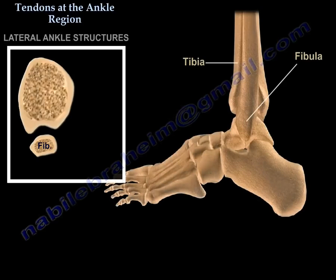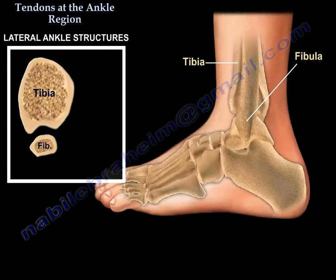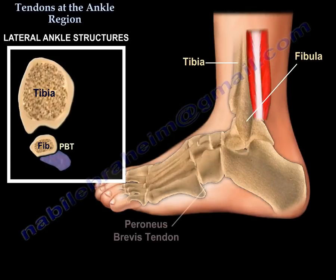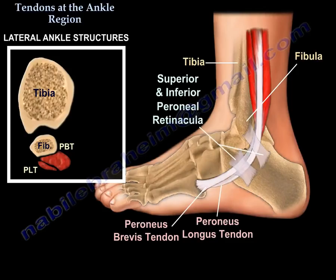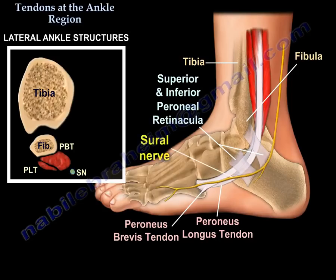Tendons at the lateral aspect of the ankle. There are two tendons: the peroneus brevis and the peroneus longus. Both run behind the fibula. You can also see the superior and inferior peroneal retinaculum, and the sural nerve passes around the lateral ankle.